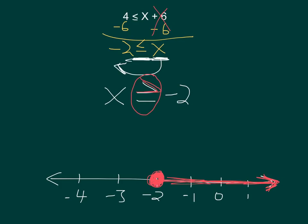So now I've graphed a two-step inequality. 4 is less than or equal to x plus 6, which turns out to be the same as x is greater than or equal to negative 2.